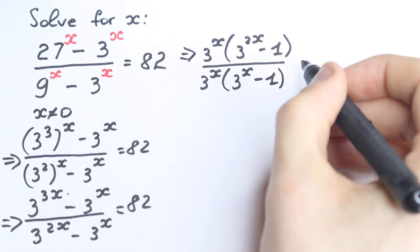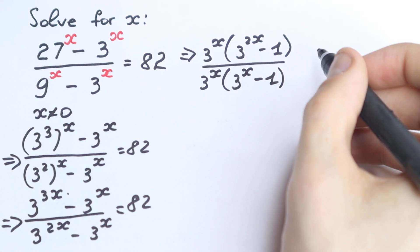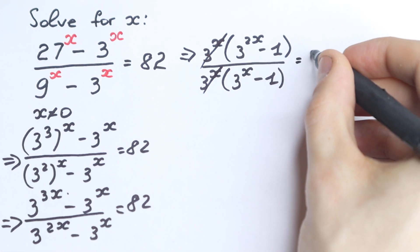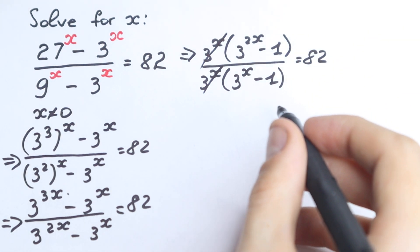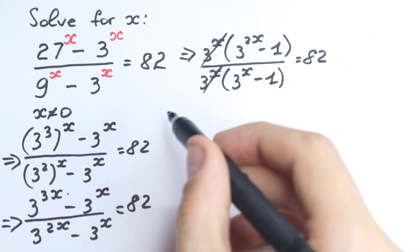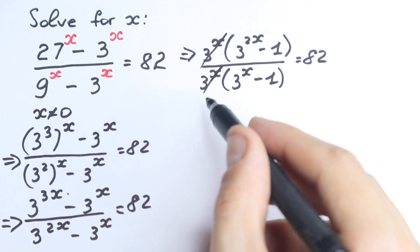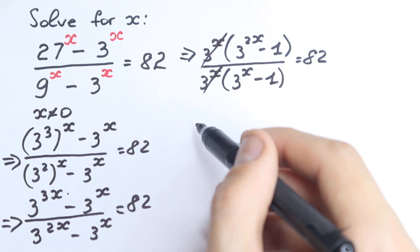Really interesting moment here: we cancel the 3 to the power x factor from both numerator and denominator. After this third step, we cancel that 3 to the power x, which is really good for us. Equal to 82, of course.